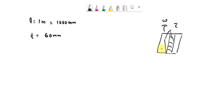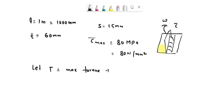The distance s equals 15 millimeters, and the maximum shear stress acting on this plate, tau maximum, equals 80 megapascals, which equals 80 Newtons per millimeter squared. Now let T be the maximum torque that the welded joint can sustain.